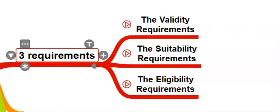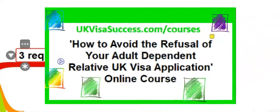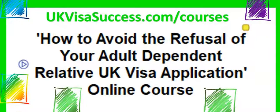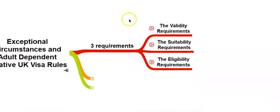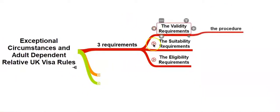It is not the purpose of this video to explain these requirements in detail. If you would like a very detailed overview of the rules and want to understand the elements of a successful adult dependent relative visa application, you are welcome to attend the online course called 'How to Avoid the Refusal of Your Adult Dependent Relative UK Visa Application' — you'll find the link under this video. However, it will probably be helpful if I summarize the requirements here as well. So the validity requirements, in simple terms, require you to comply with the correct procedure.